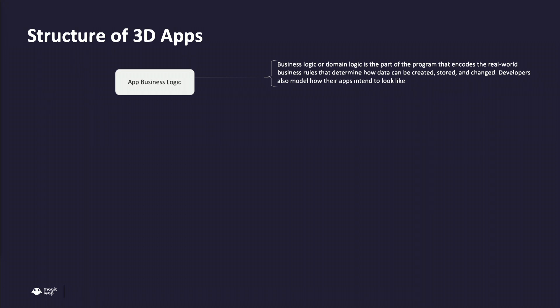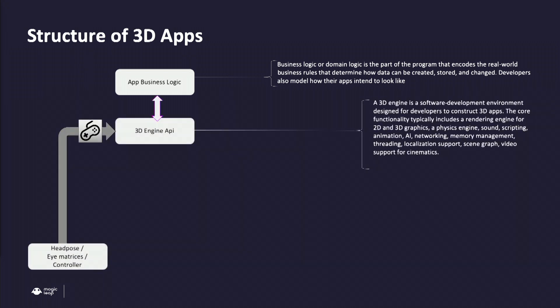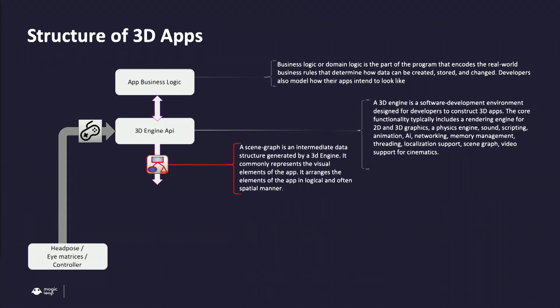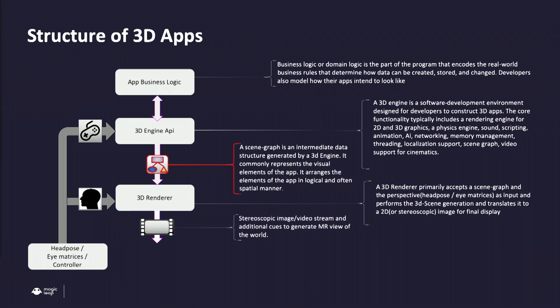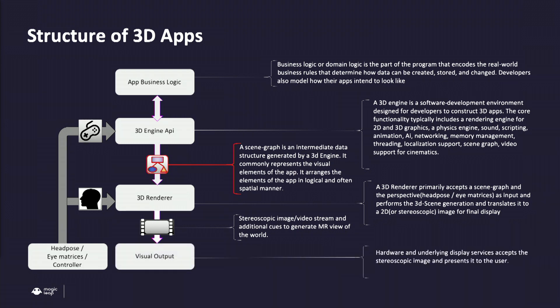Let's look at how a 3D app is generally structured. Most apps have a business logic on top — this is where most developers spend their time. Then, depending on the engine, you have a set of APIs which allows developers to construct their app. The engine provides the interface for rendering. The output of an engine is the scene graph, which is the most critical part for us in Lumen Runtime. A renderer consumes the scene graph and outputs an image every frame. In a mixed reality app, your head pose is used as a perspective, so you get a stereoscopic output consumed by the device.